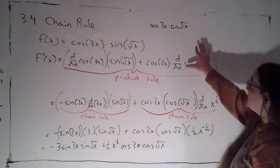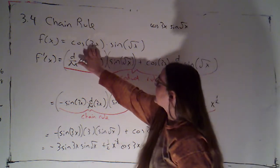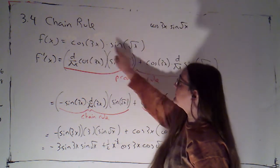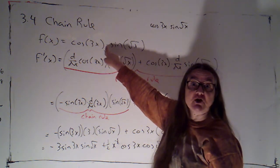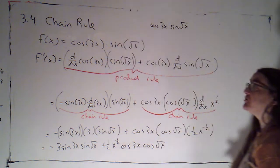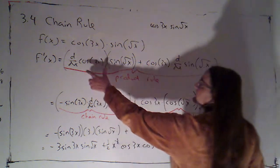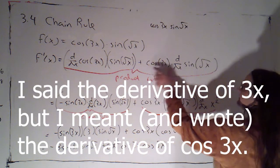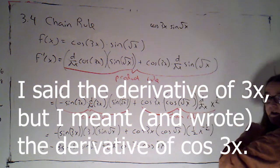Alright, looking at this, I recognize that that's a cosine of 3x, a sine of root x. Those are two different functions connected by multiplication. So the first step was just to use product rule. So we're going to have the derivative of cosine of 3x times sine of root x plus cosine of 3x times the derivative of sine of root x.